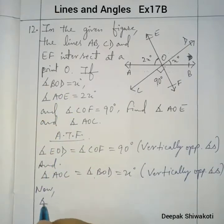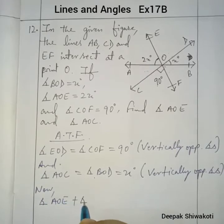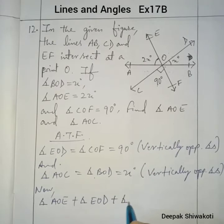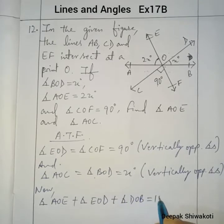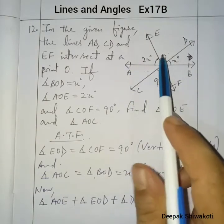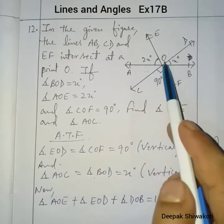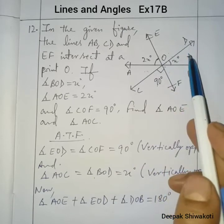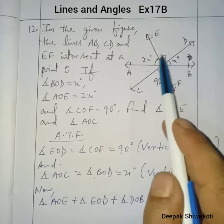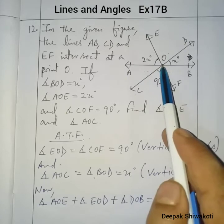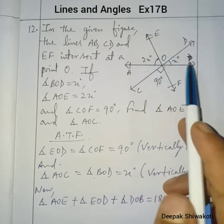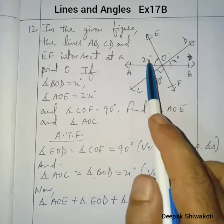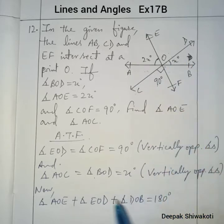Angle AOE plus angle EOD plus angle DOB is equal to 180 degrees, because AOE, EOD, and DOB are all at a point on a line. So the sum of these angles is equal to 180 degrees.